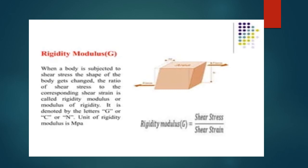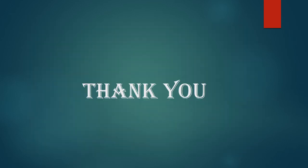Finally, rigidity modulus — from the cube-like structure, when there is a shear stress applied with one end fixed and there is a slight deformation at the other end, we can define it as the ratio of shear stress to shear strain. The ratio of shear stress and shear strain is called rigidity modulus, denoted by G. Thank you.